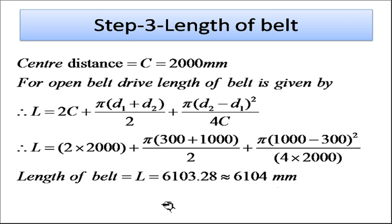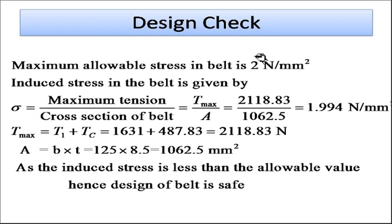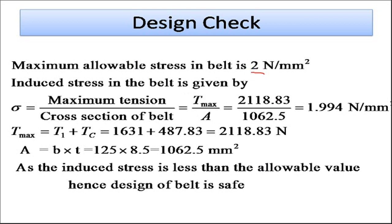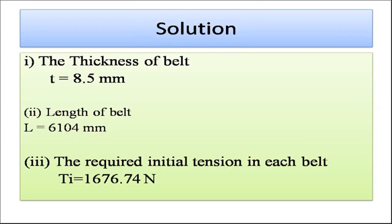Design check: induced stress = T_max / area = (T1 + Tc) / (b × t) = (1631 + 487.83) / (125 × 8.5) = 2118.83 / 1062.5 = 1.994 N/mm², which is less than the allowable 2 N/mm². Hence the design is safe. Summary for numerical 3: belt thickness = 8.5 mm, belt length = 6104 mm, initial tension = 1676.74 N.